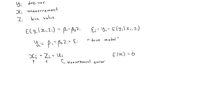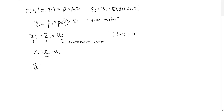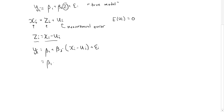From the relationship between x and z, we see that zi = xi - ui. I can now take this value for z and plug it into the true model. If I do that, I get yi = beta1 + beta2*(xi - ui) + epsilon_i. And if I expand this, it becomes yi = beta1 + beta2*xi + epsilon_i - beta2*ui.